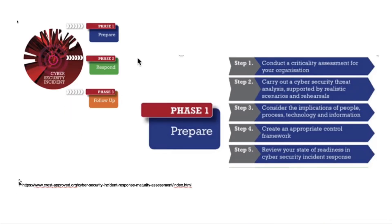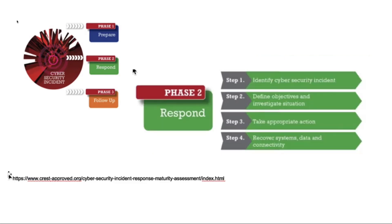In the first phase — prepare — you need to understand what kind of systems you are dealing with, whether you have electronic data classified, and whether you have administrative, technical, or physical controls to protect your assets. You should have a business impact analysis to understand what happens if a certain system goes down, how much money you will lose, and how much operational time you will lose. Once you have all this information in hand, you can start dealing with an incident.